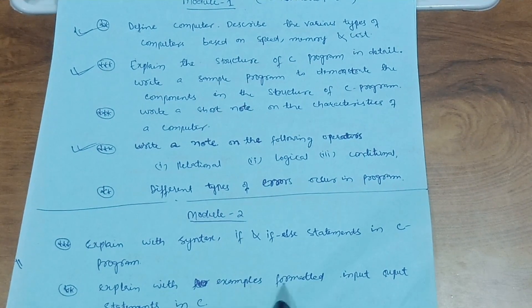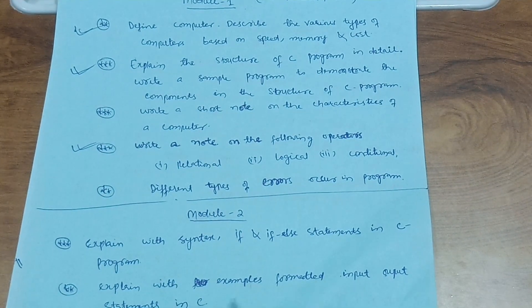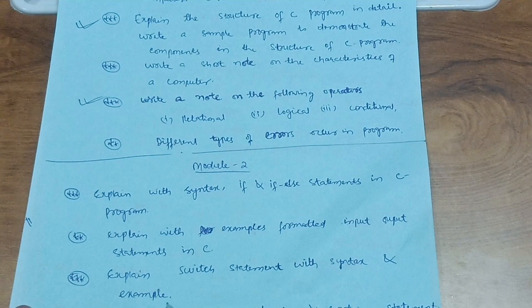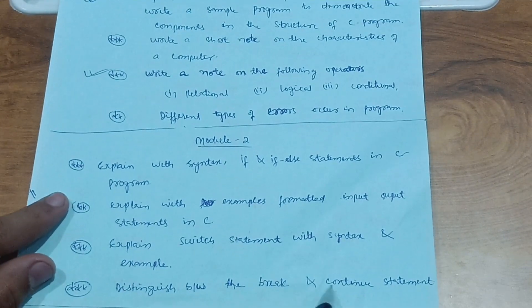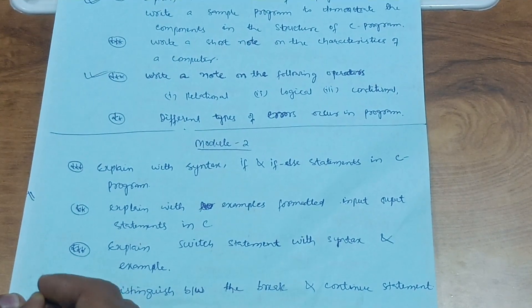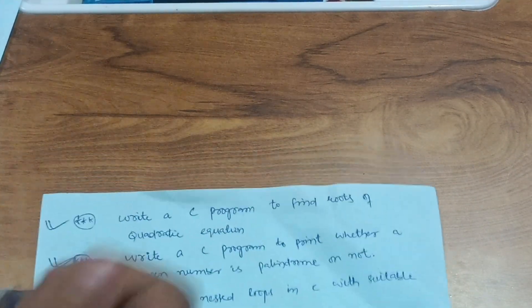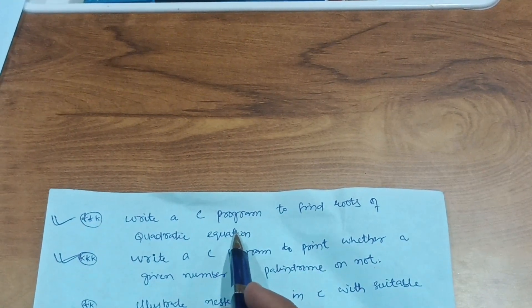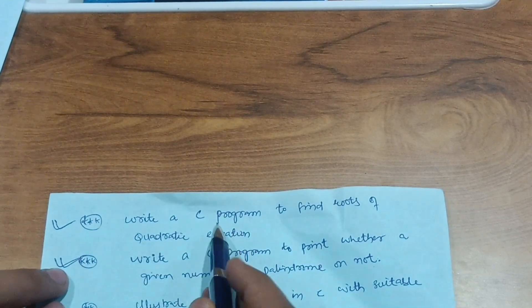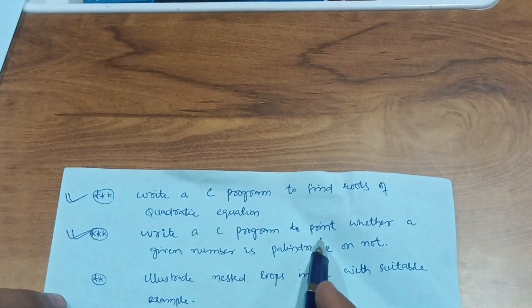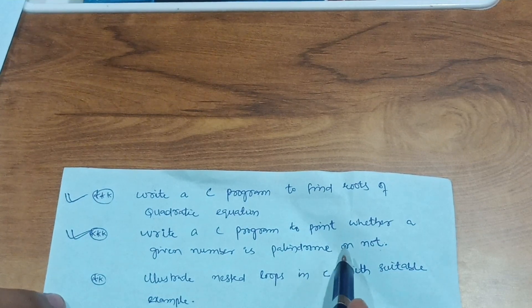From Module 2, focus on: explaining if and if-else statements with examples in C; explaining formatted input/output statements in C; explaining the switch statement with syntax and example; and distinguishing between the break and continue statements — that is a super important question. Also, write a C program to find the roots of a quadratic equation, which is much more important than other programs.